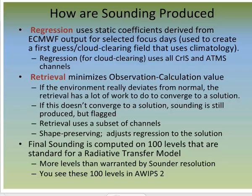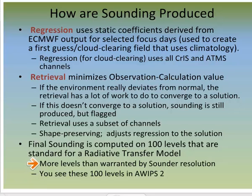The observation vector is a cloud-cleared radiance spectrum that uses a subset of CrIS radiances. The calculation vector is from a radiative transfer model that uses the regression solution, trained with the ECMWF and climatology. The final output is mapped to 100 levels that are standard for a radiative transfer model. If you view the data in AWIPS, you'll notice that the 100 levels are always the same pressure surfaces — it's really more levels than are resolved.